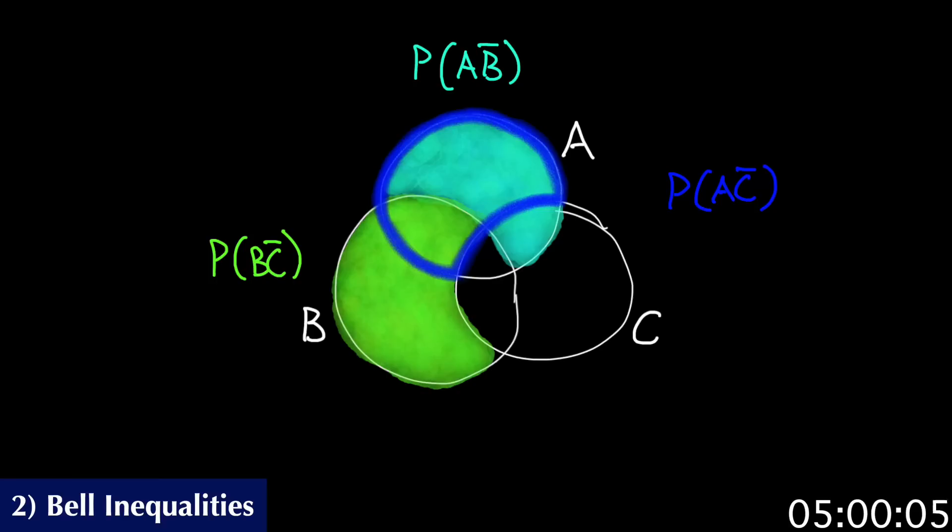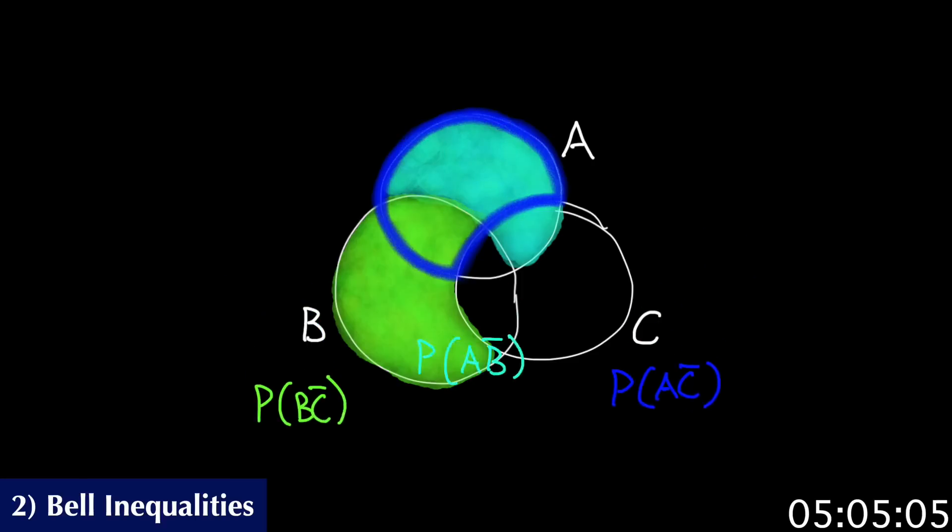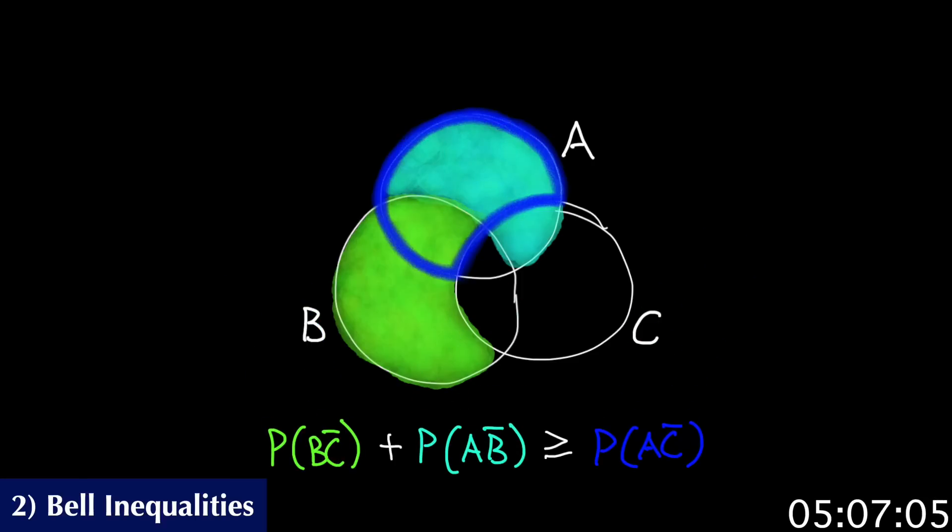As you can see, this area is completely contained within the other two. So we can formulate an inequality like this. And even if we know nothing about the probabilities for the outcomes themselves, we can formulate these inequalities for the correlations between them.